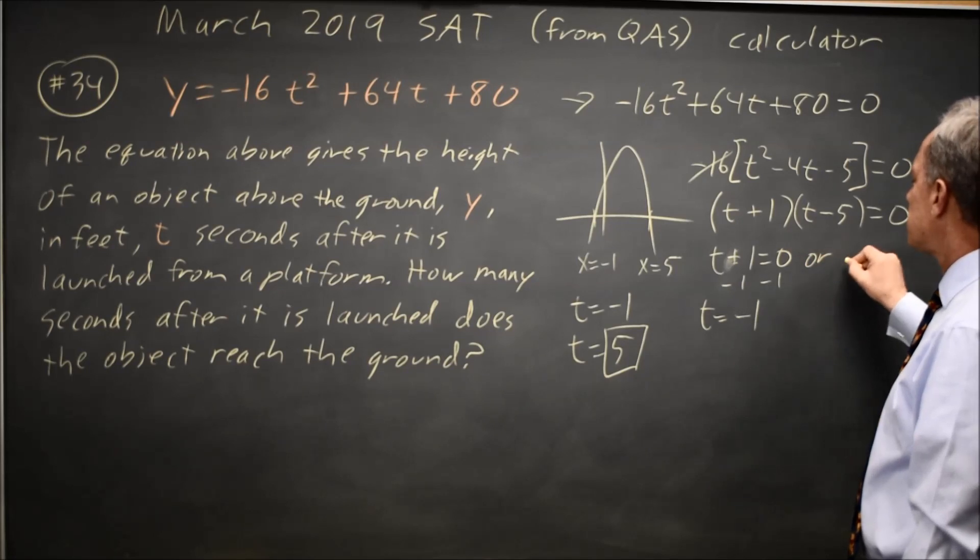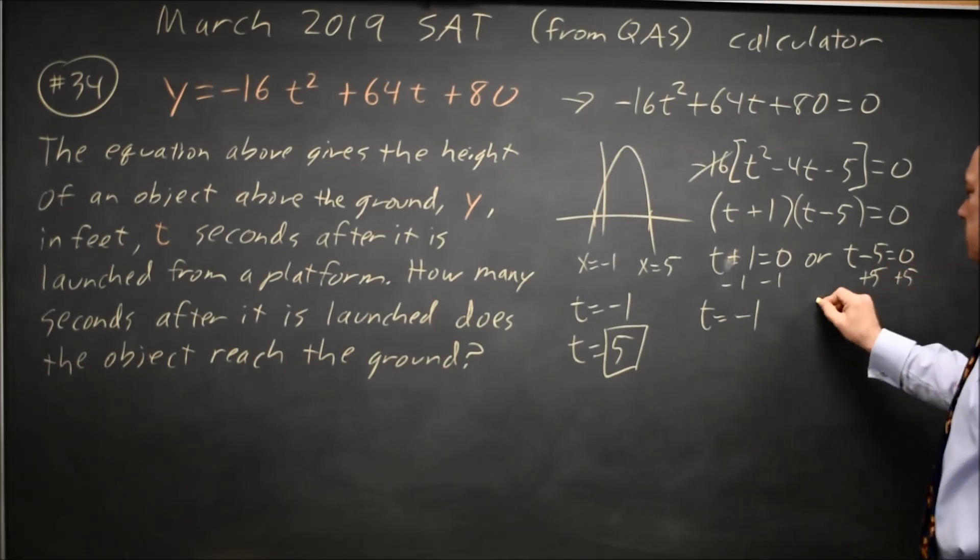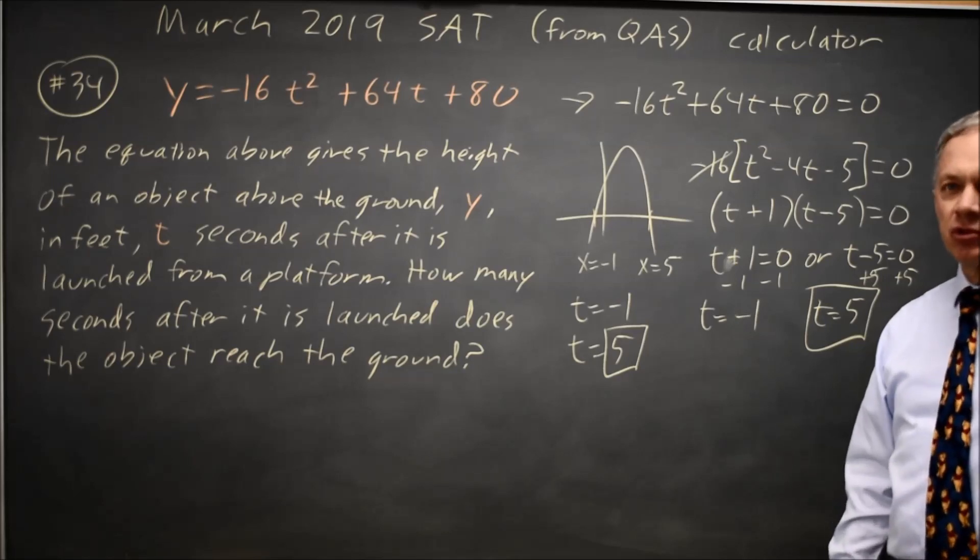Or if the first factor is not 0, the second factor is 0. t minus 5 equals 0, add 5 to both sides, t equals 5, and t equals 5 would be the answer we're looking for.